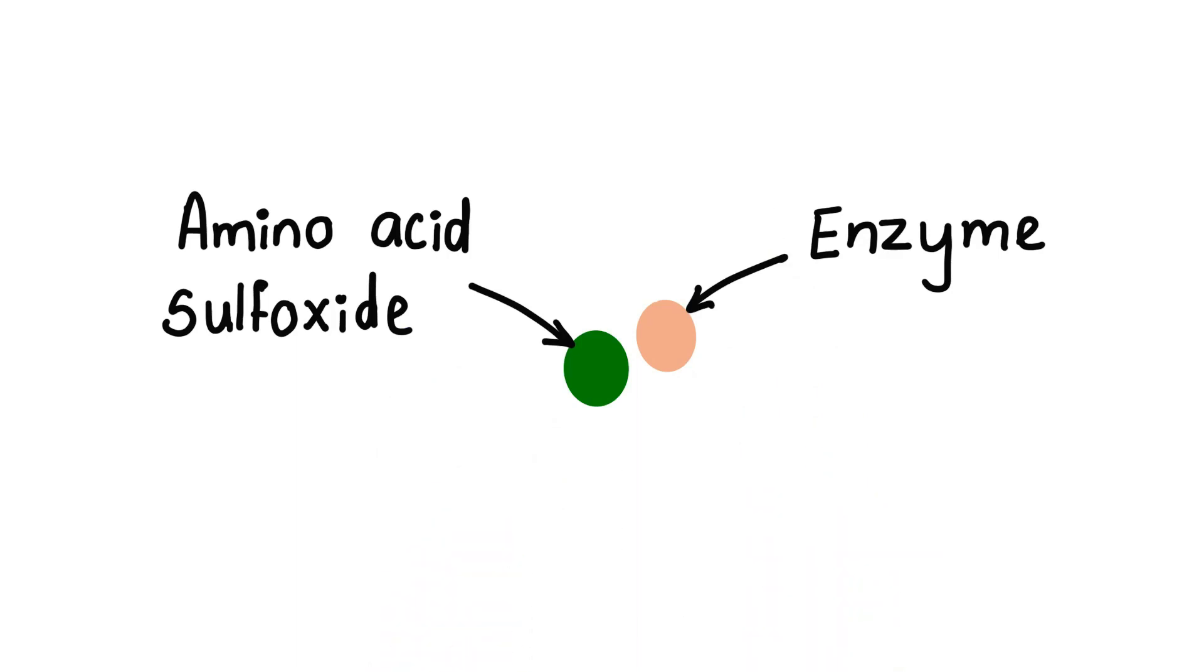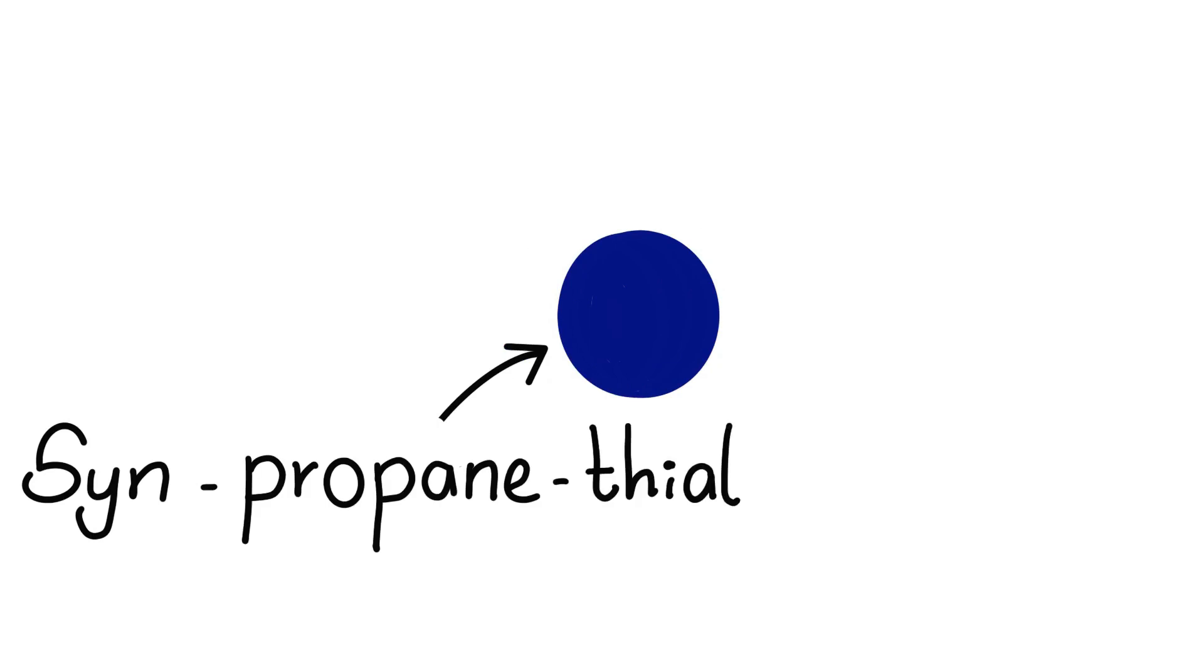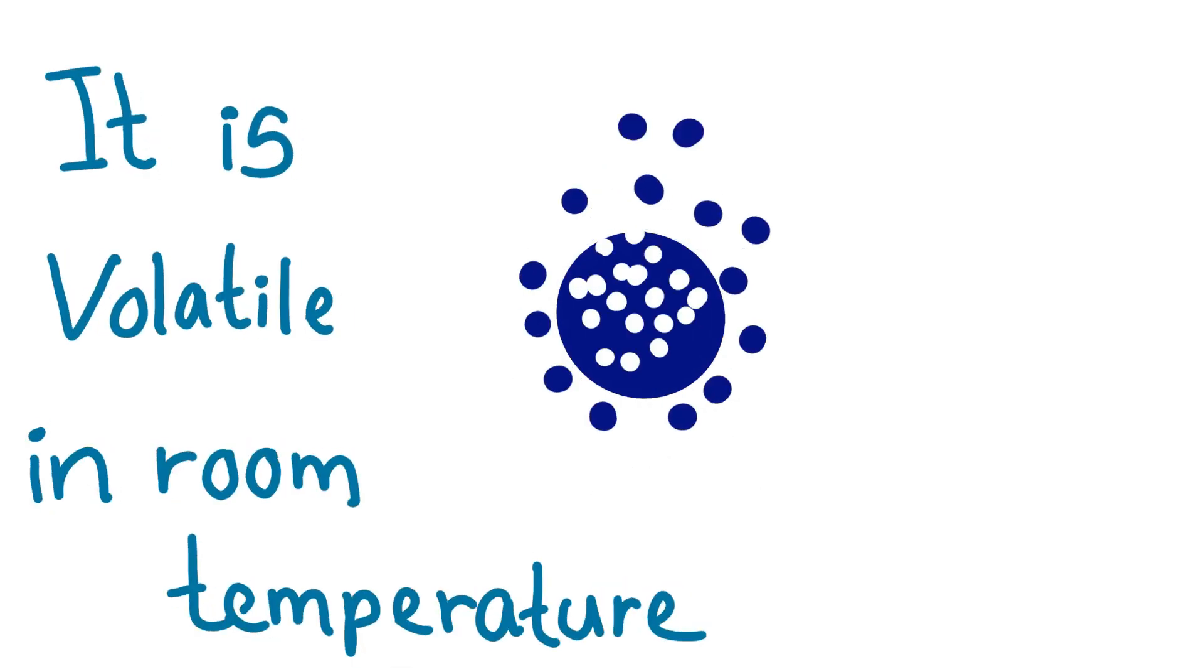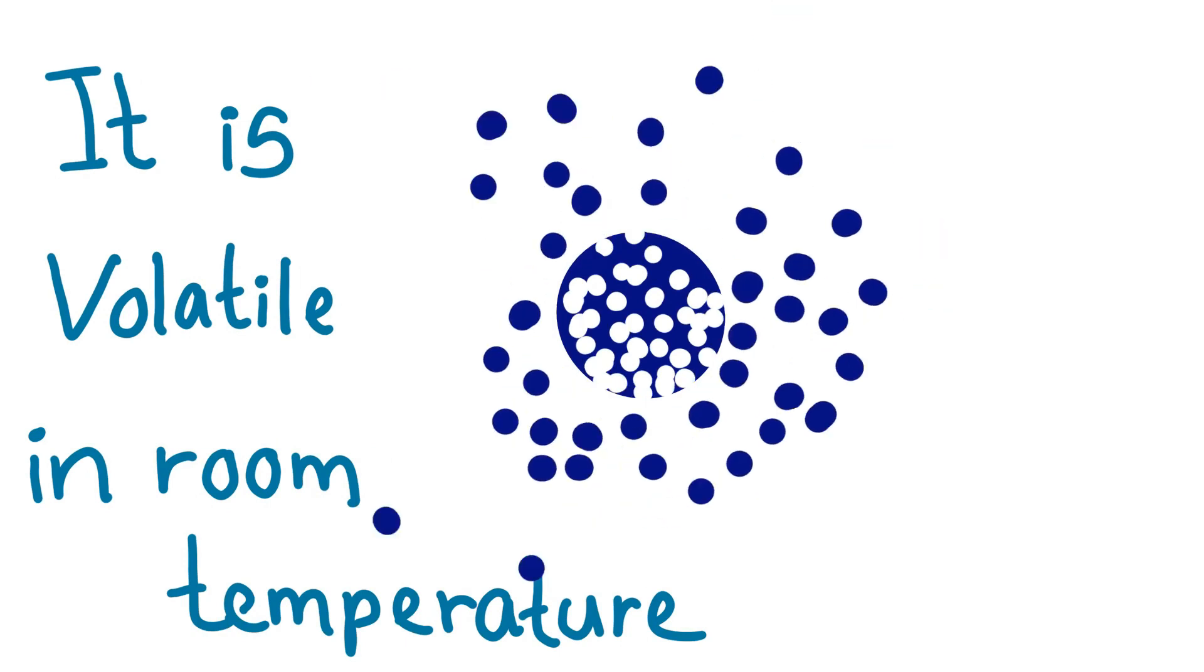This enzyme combines with amino acid sulfoxide and forms a special chemical component called syn-propanethial-S-oxide. Syn-propanethial-S-oxide is a volatile substance and it easily evaporates at normal room temperature by forming a gas.